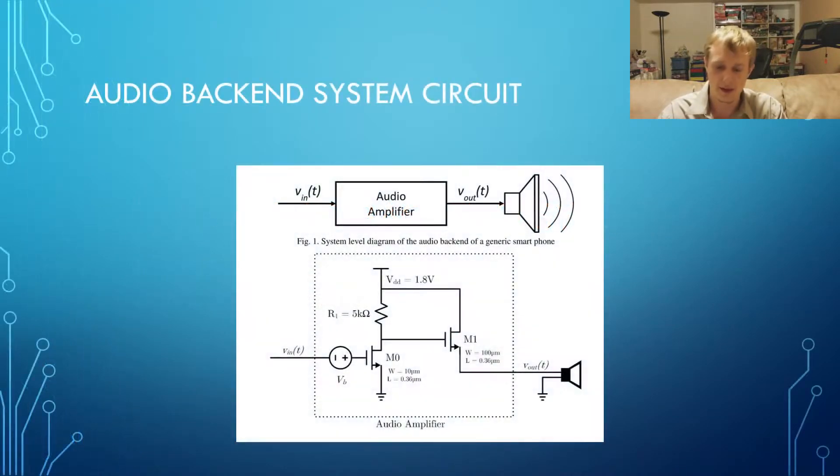This is the circuit for the audio back-end system. It is made up of a DC voltage source VB, a 5 kiloohm resistor, a voltage source of the drain VDD, and two NMOS transistors.